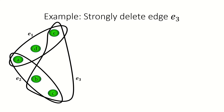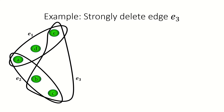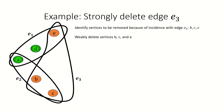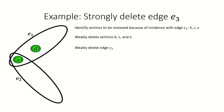As an example, let's strongly delete edge e sub 3 from this hypergraph. First, identify the vertices that are contained by e sub 3 — that would be vertices b, c, and e. Next, weakly delete those vertices from our hypergraph. Finally, weakly delete e sub 3 from our hypergraph. This is the result.